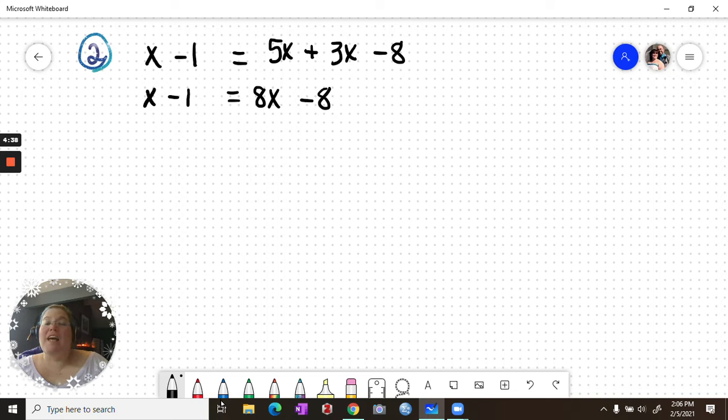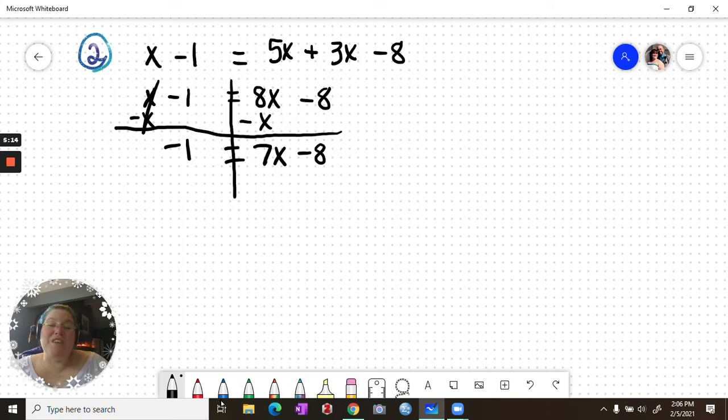Step 2, get the x's on the same side of the equation. So I can do that two ways: subtract x from both sides or subtract 8x from both sides. So I am going to subtract x because I like to keep my coefficients positive as often as possible. So negative 1 remains on the left, 8x minus x is 7x minus 8. Now I'm going to get my constants together so that we can begin isolating the x, so I will add 8 to both sides.